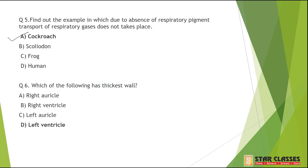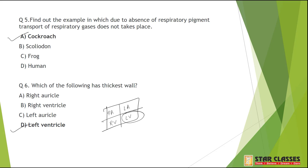Question number 6: Which of the following has the thickest wall? Among all four chambers — right atrium, left atrium, right ventricle, left ventricle — the thickest wall belongs to the left ventricle. So your answer is D, left ventricle.